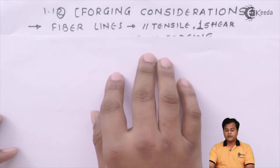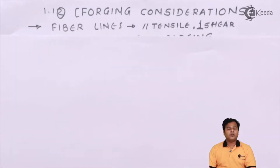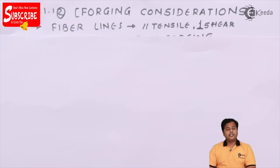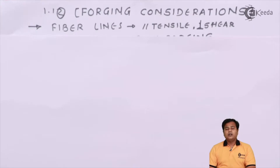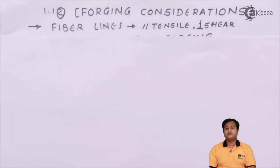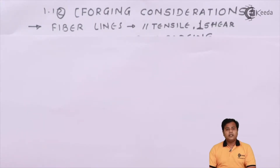You can see in this slide, the first one is fiber lines. What are the fiber lines? We know that when forging is done, the molten material solidifies. All the particles of materials are oriented in such a manner that they create fine fiber lines. These fine fiber lines are very important because this is how the different molecules of the materials are connected with each other. The strength of the material or the strength of the molecules depends upon the fiber lines.